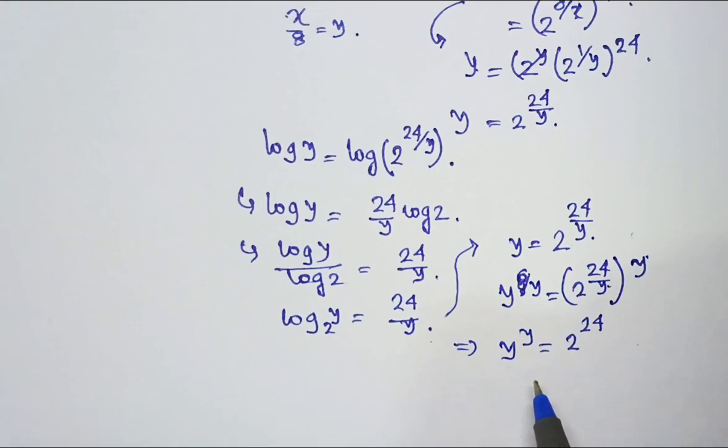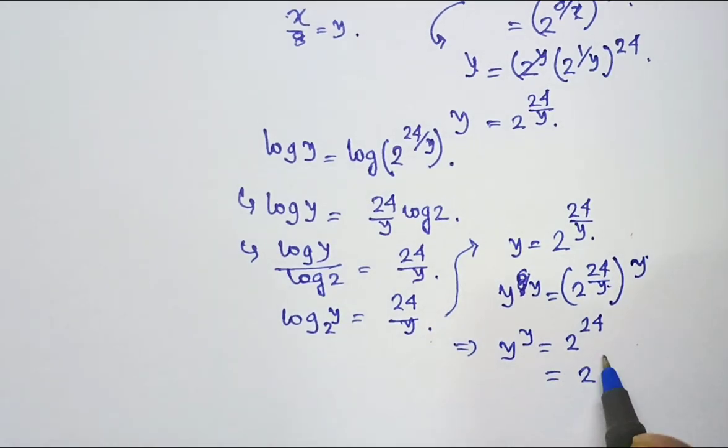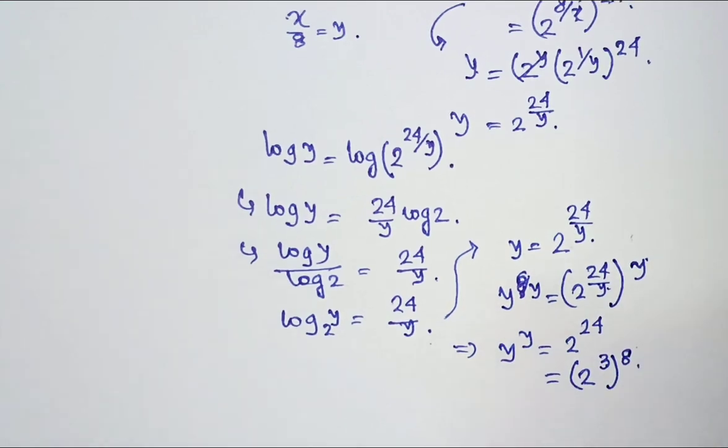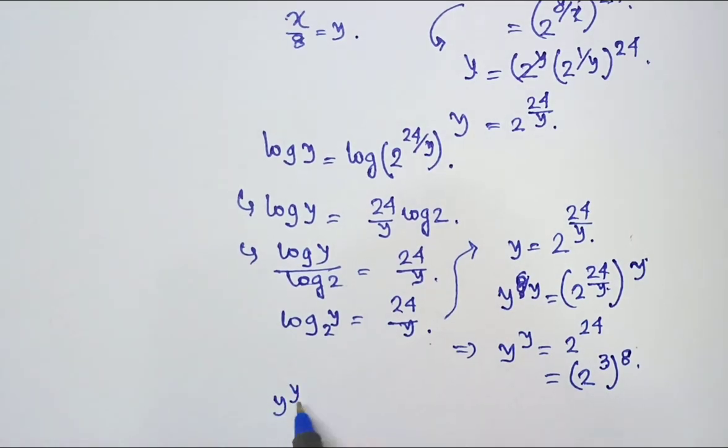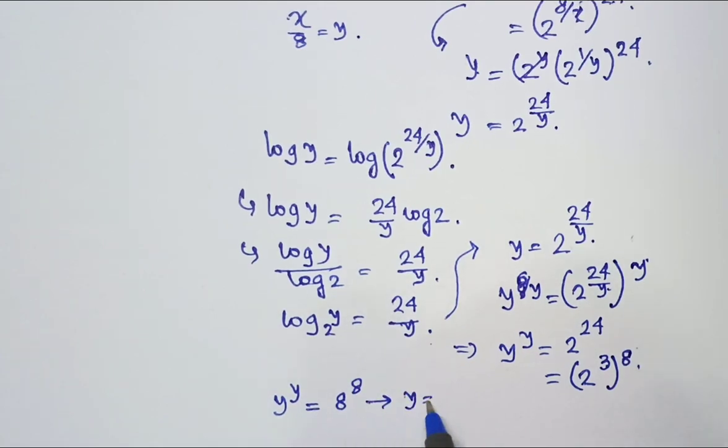So 2 to the power 24 I can write it as 2 to the power 3 whole to the power 8 because 3 into 8 is 24. In turn y to the power y becomes 2 to the power 3 is 8. 8 to the power 8 obviously y equal to 8.